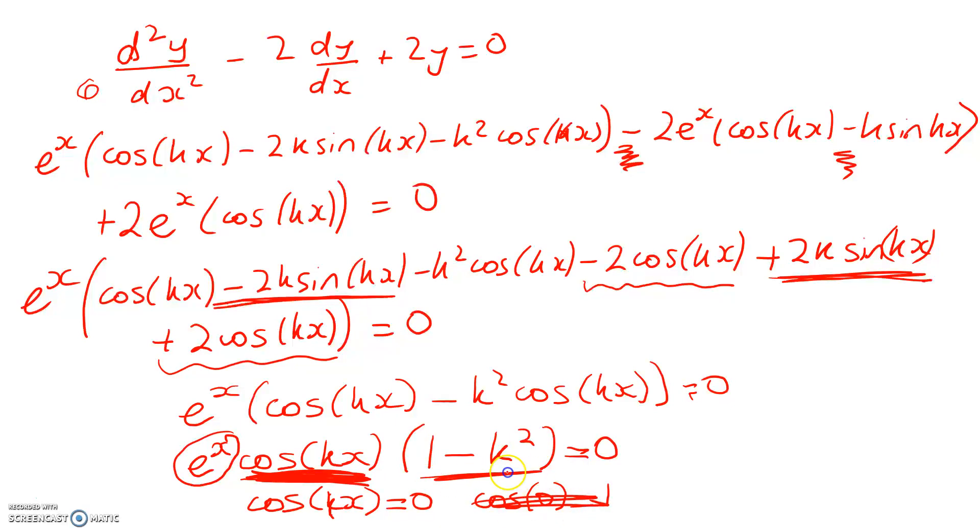So the only way that I'm going to have this true for all values of x is if one minus k squared is equal to zero. So k squared is equal to one. So my final answer is k is equal to one or negative one. Thanks for watching.